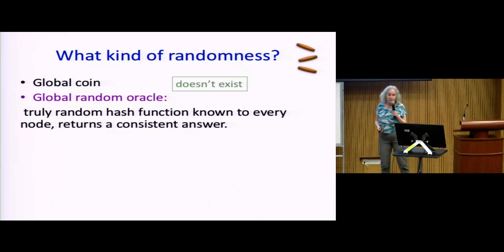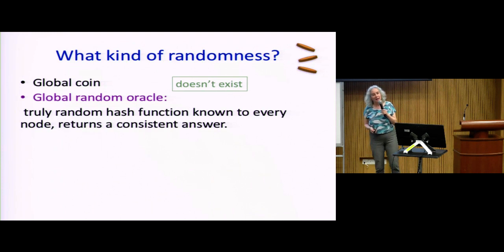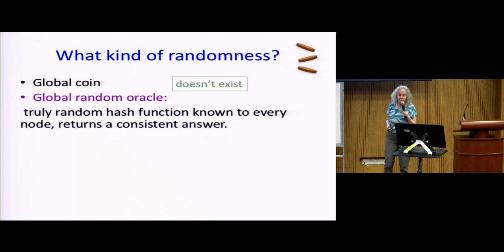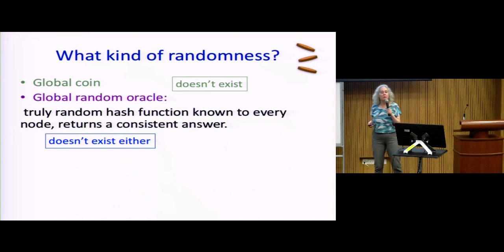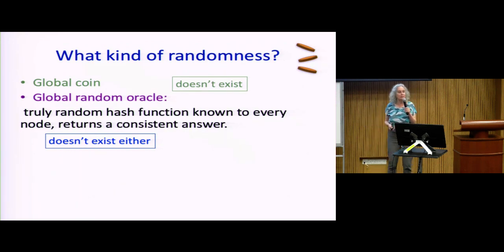What kind of randomness? The literature on blockchain uses the random oracle model — a hash function where if any node gives it a value, every node has access and gets back the same truly random value. However, my husband who is a cryptographer says that's bogus — it doesn't really exist. Not only does a global coin not exist, but the random oracle model for a hash function has no proof and no known way to construct it.